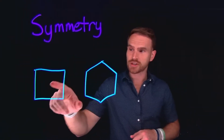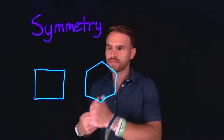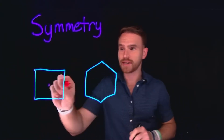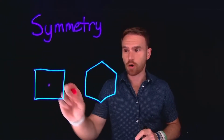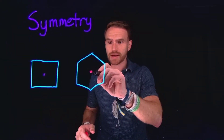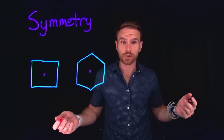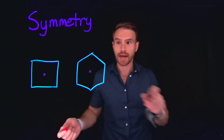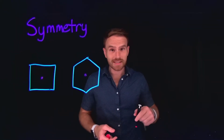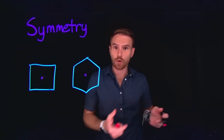For example, if you consider a square and a point at the center of that square and you were to rotate around that point 90 degrees, you would see that this molecule looks the exact same. Similarly, if we were to place a point at the center of a hexagon, or in the case of a molecule like cyclohexane, and you were to rotate 60 degrees, the molecule would look the exact same. In this class, we're going to investigate what that means for different chemical properties.